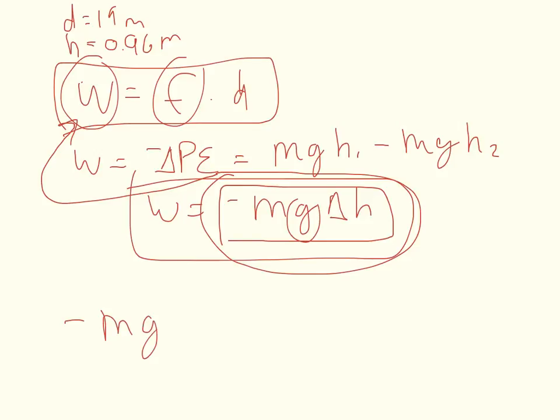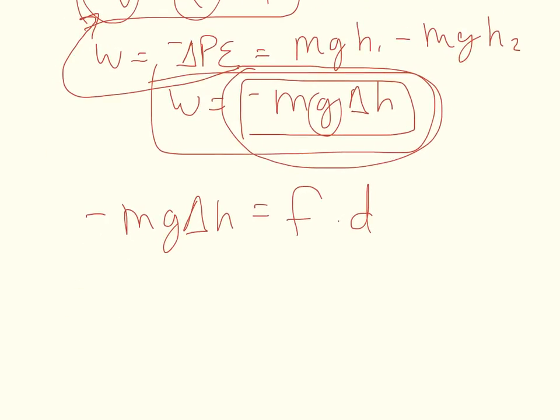So negative M G delta H is going to equal force times distance. And if I want to solve for the force required to push that thing, all I've got to do is divide by D on both sides. So force is equal to negative M G delta H divided by the distance.